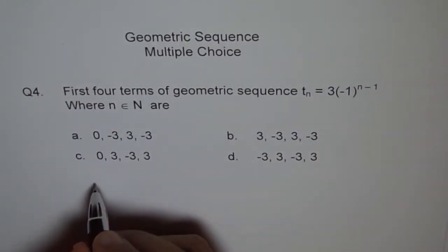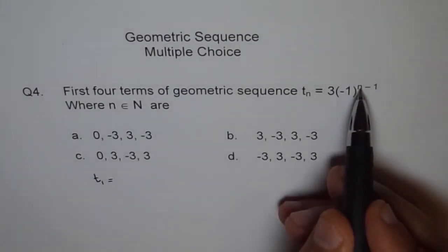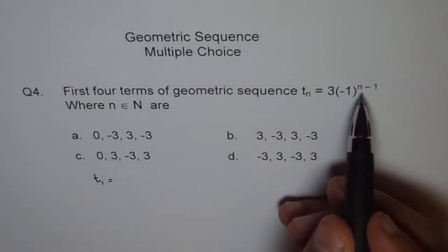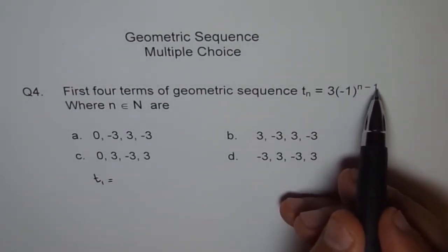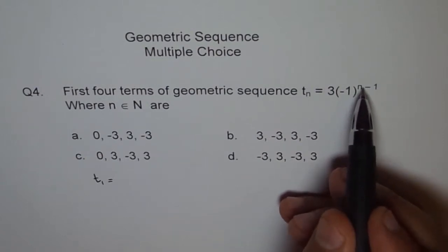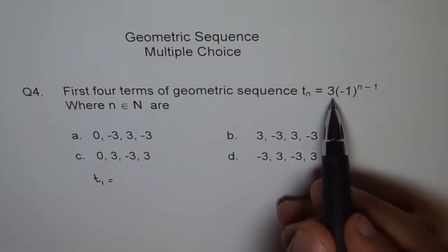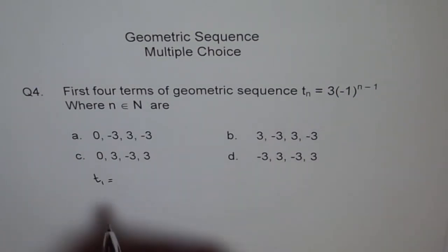T1 will be n equals to 1. So 1 minus 1 is 0. Anything to the power of 0 is 1. So we get just the number 3.